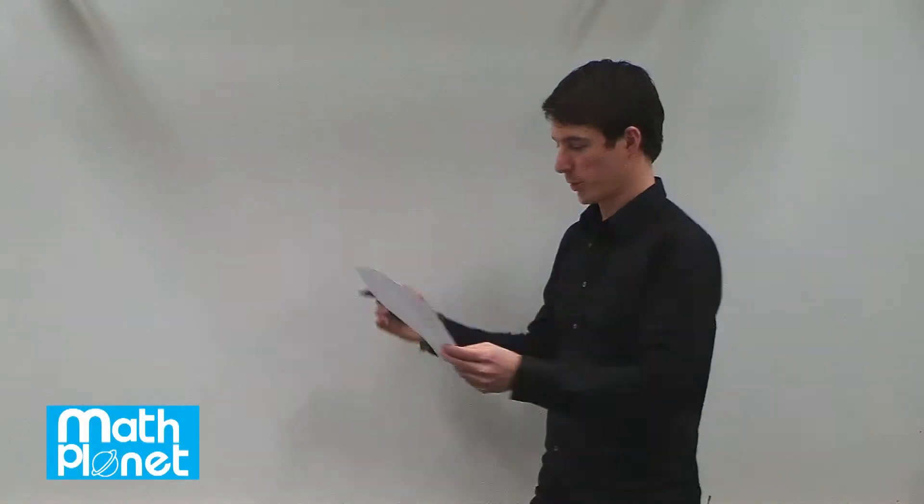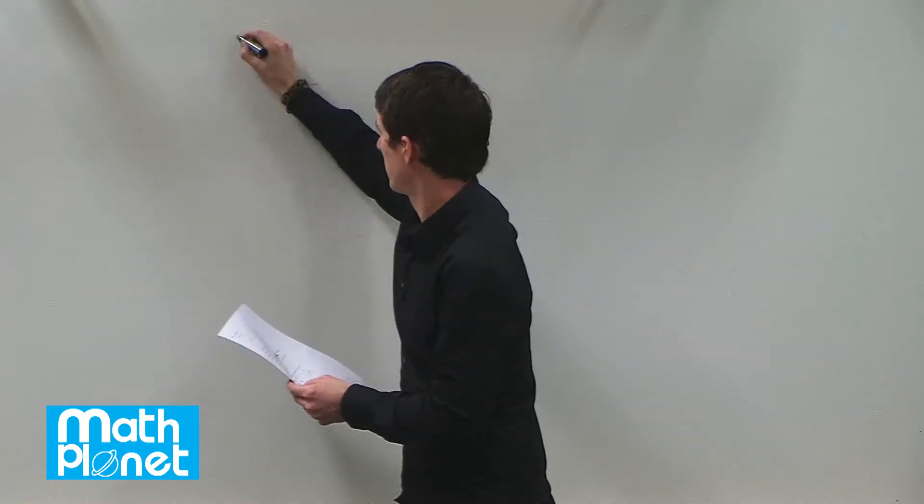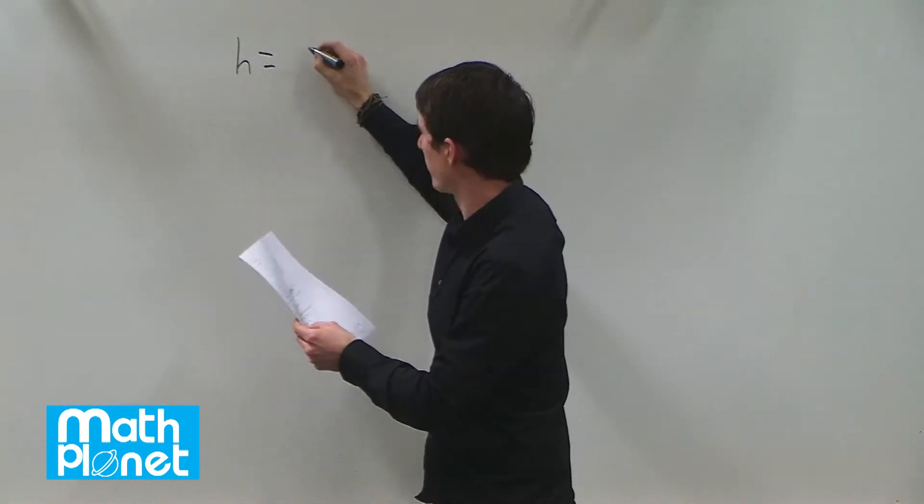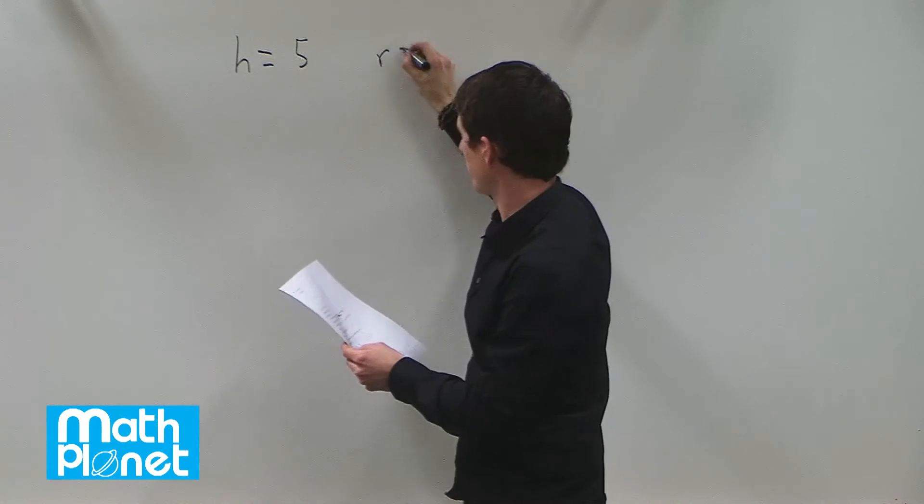In this problem we want to determine the volume of a cone if we're given the height and the radius. The height is 5 and the radius is 3.